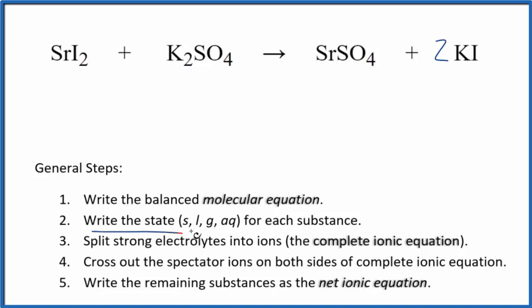Next, we need to write the state for each substance. So compounds with iodine in general are pretty soluble. We're going to write AQ. If you know your solubility rules, compounds with potassium are very soluble, AQ. That means aqueous. They're going to dissolve, dissociate into their ions.